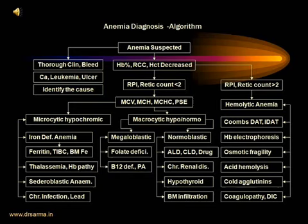If MCV is more than 100, we are dealing with macrocytosis. The question is: is it megaloblastic or normoblastic macrocytosis? If megaloblastic anemia with macrocytosis, we may be dealing with folic acid deficiency, vitamin B12 deficiency, or the rare condition pernicious anemia (absolute vitamin B12 deficiency due to intrinsic factor absence — an autoimmune disease). If macrocytic normoblastic, we must consider alcoholic liver disease, chronic liver disease, drug-induced bone marrow depression, chronic renal disease (CKD), hypothyroidism, or bone marrow infiltration.